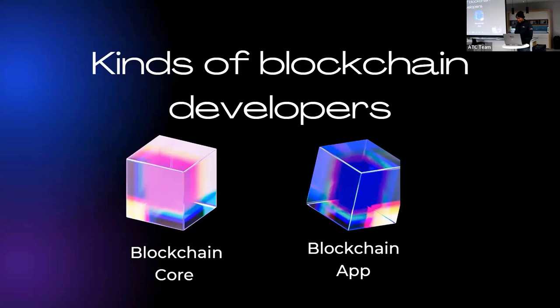There are essentially two types of blockchain developers: a blockchain core developer and a blockchain app developer. Blockchain core developers create software that runs on the blockchain network, such as the blockchain client. Blockchain app developers build applications on top of the blockchain — these are called dApps, or decentralized applications. This is what Web 3 app development refers to.